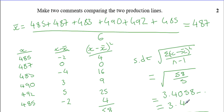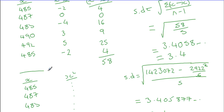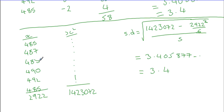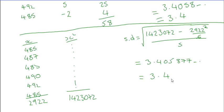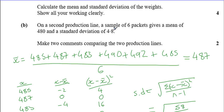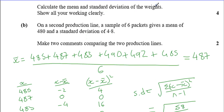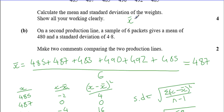The other way of finding standard deviation is to find your x values, find your x² values, find the totals, and then substitute into the alternative formula. Either way you get exactly the same answer. On a second production line, a sample of 6 packets gives a mean of 488 and a standard deviation of 4.8. So our first production line has a mean of 487 and standard deviation of 3.4; the second has a mean of 488 and standard deviation of 4.8.